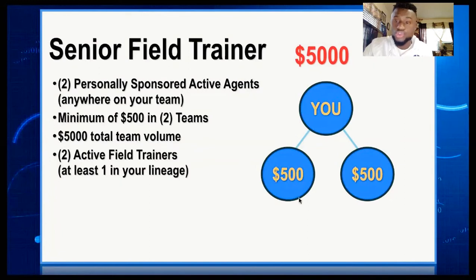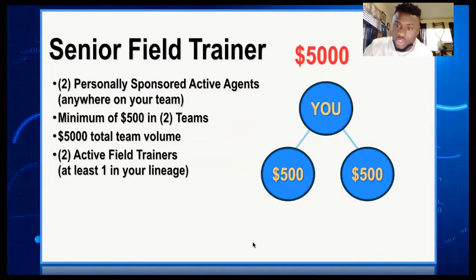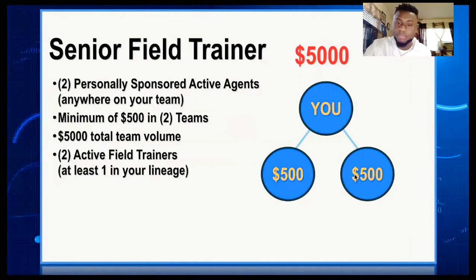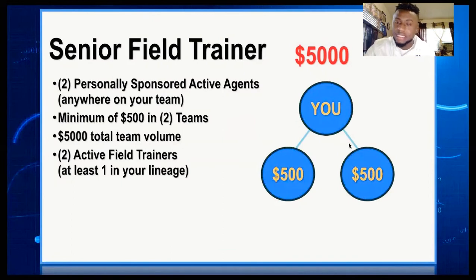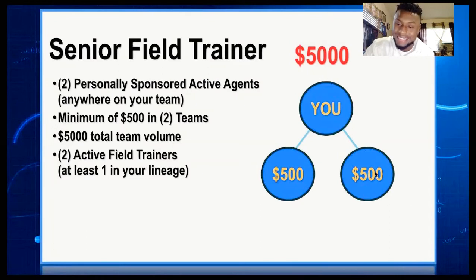So what you need for Senior Field Trainer: the structure is that both people you signed become Field Trainers. You can get one of them to become a Field Trainer, then the other. Or one of the people you signed brings someone else who becomes a Field Trainer — since you need 2. The second leg — when you get it — put it at a minimum of 500 in volume. If that leg is not at 500 in volume minimum, you won't get the promotion. Put the leg at 500 minimum, then the total volume must reach 5000.